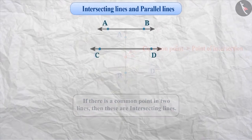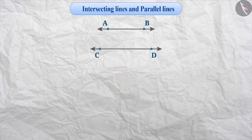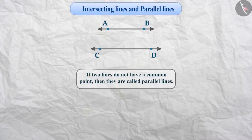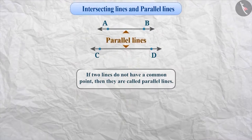If two lines do not meet at any point — that is, there is no common point between these two lines — then they are called parallel lines. For instance, lines AB and CD are parallel, which is represented like this.